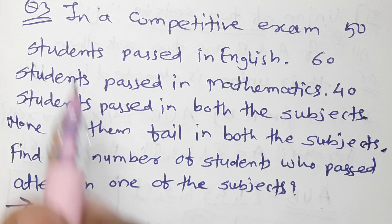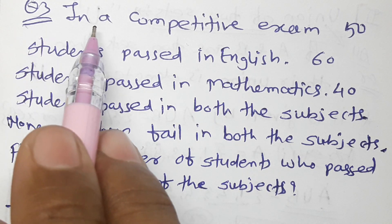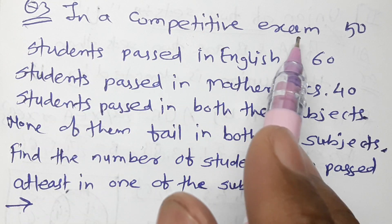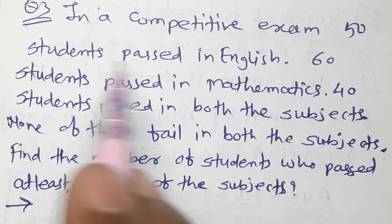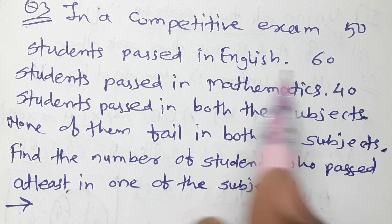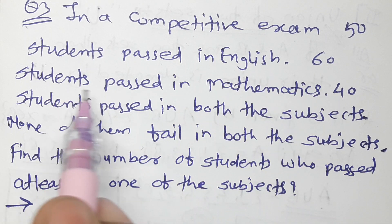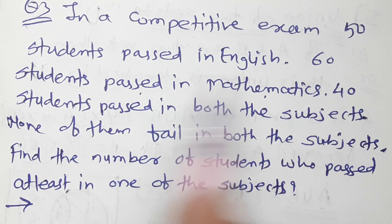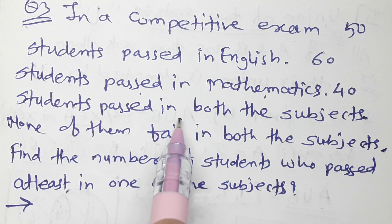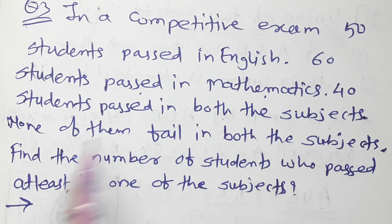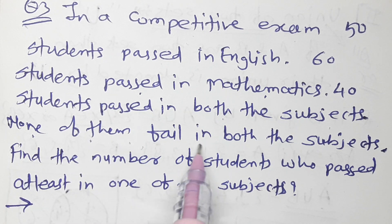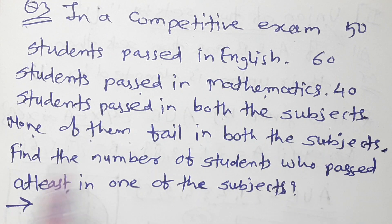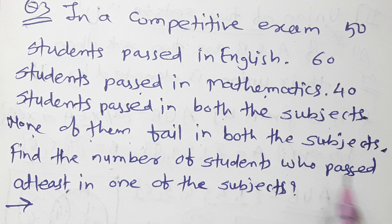Question number 3: In a competitive exam, 50 students passed in English, 60 students passed in Mathematics, and 40 students passed in both subjects. None of them failed in both subjects. Find the number of students who passed in at least one of the subjects.